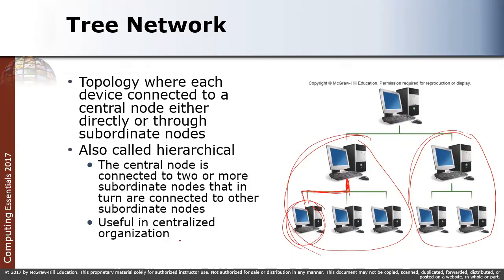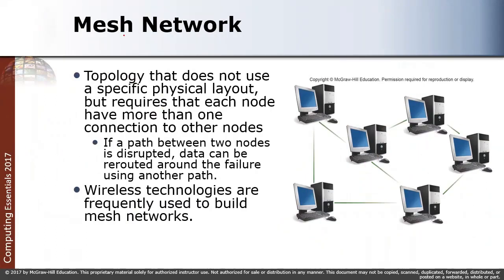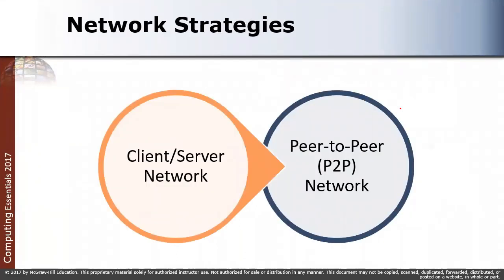A mesh network is the newest type and does not use a specific physical layout. It requires that each node have more than one connection to other nodes. If a path between two nodes is disrupted, data can be rerouted around the failure using another path. Wireless technology is frequently used to build mesh networks, and unlike star or bus networks, there is no required specific physical layout.